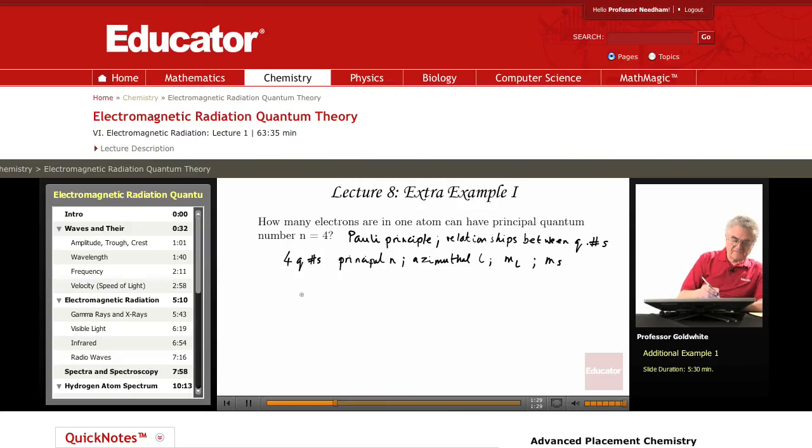Since n is 4, the possible values of l can be 3, 2, 1, or 0, corresponding to s, p, d, and f type orbitals.